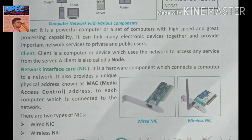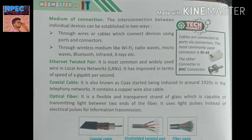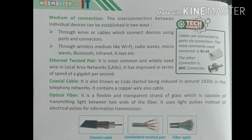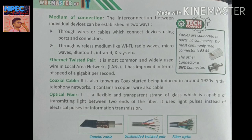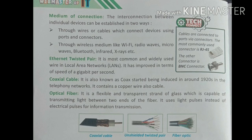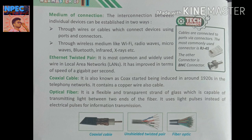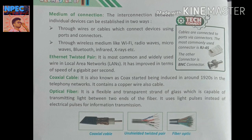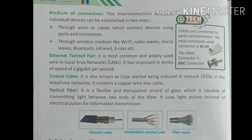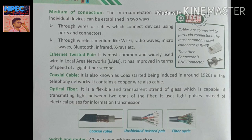Next page is the medium of connections — how do we connect? The interconnection between individual devices can be established in two ways. First, through wires and cables which connect devices using ports and connectors. Second, through wireless medium like Wi-Fi, radio waves, microwaves, Bluetooth, infrared, etc.